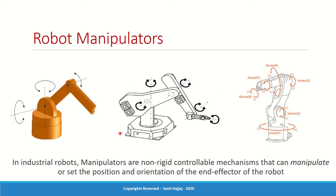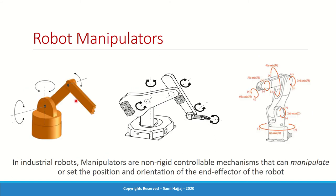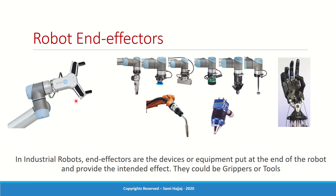What effect do you want? If you want a pick-and-place robot, you need a gripper. If you want a welding robot, you need a welding gun at the end. If you want an inspection robot, you need an inspection sensor. If you want a spray paint robot, you need a spray paint nozzle. Whatever effect you need the robot to produce is defined by the end effector. The position and orientation of the end effector is set by the manipulator. So an industrial robot is essentially a combination of the manipulator plus the end effector.